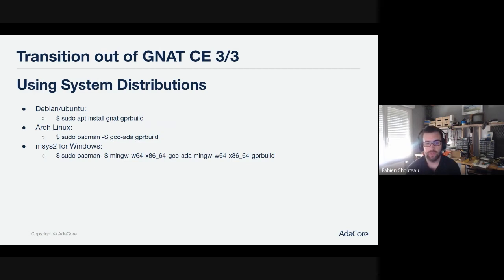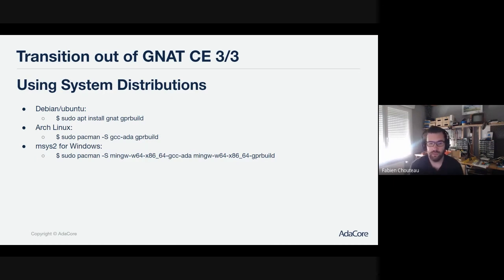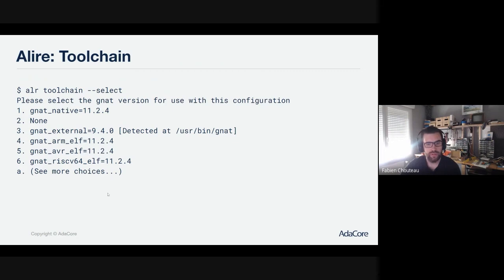The last option is to use system distributions like Ubuntu, Arch Linux, and so on. On Debian/Ubuntu the support is quite good. On Arch Linux you can have the compiler and GPRbuild. MSYS2, which is a kind of Cygwin package manager for Windows, also has GNAT FSF — which they call gcc-ada — and GPRbuild. Right now you don't have access to GNAT Studio through those systems, but you can still download it from GitHub and that will work as well.